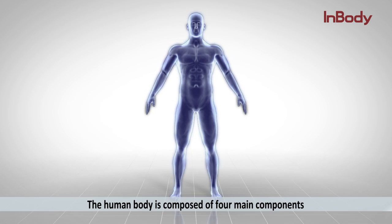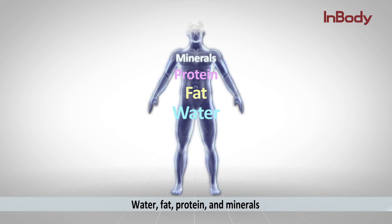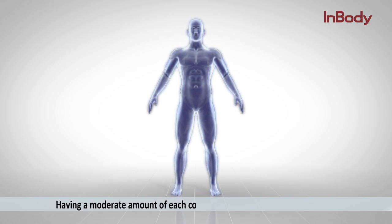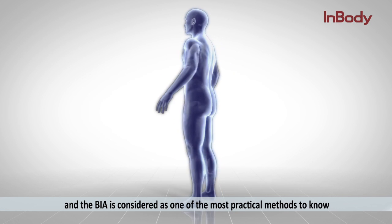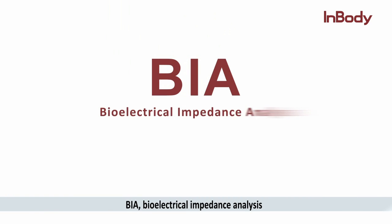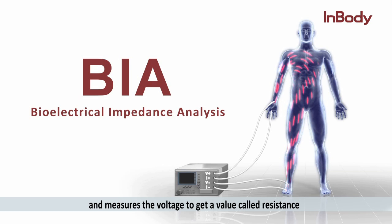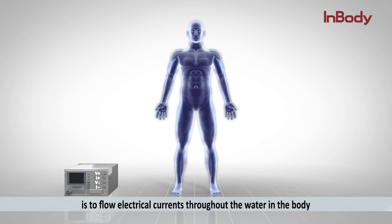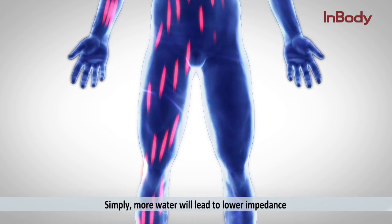The human body is composed of four main components: water, fat, protein, and minerals. Having a moderate amount of each component is important for a healthy life. BIA — bioelectrical impedance analysis — is considered one of the most practical methods to assess body composition. This method applies small currents throughout the body and measures the voltage to get a value called resistance, also known as impedance. The principle is to flow electrical currents through the water in the body and measure the amount of resistance encountered — simply, more water leads to lower impedance.